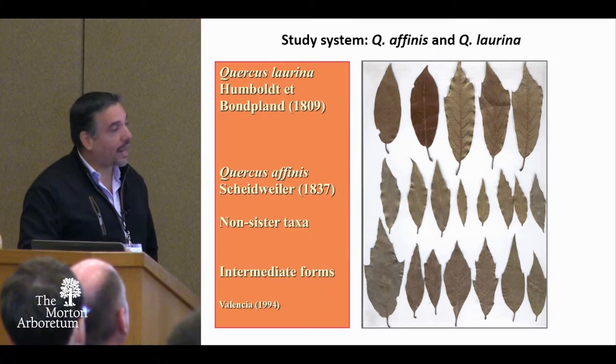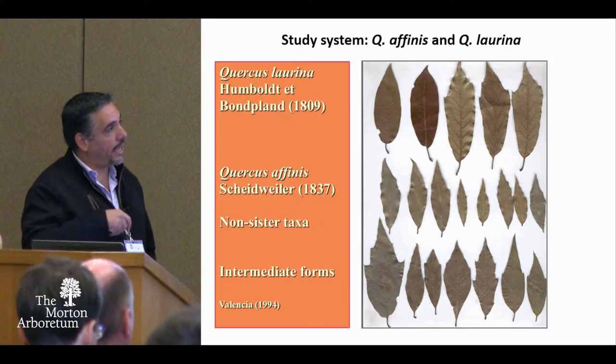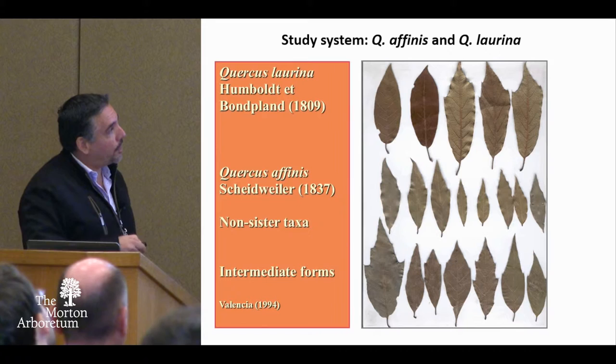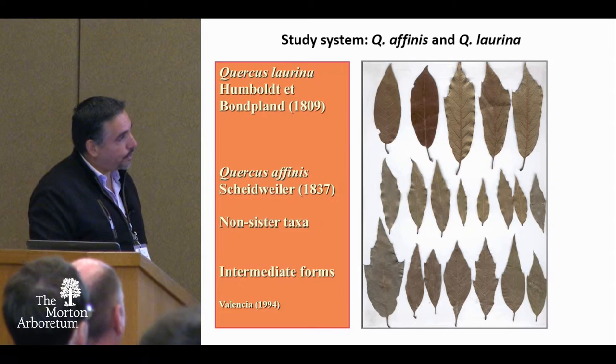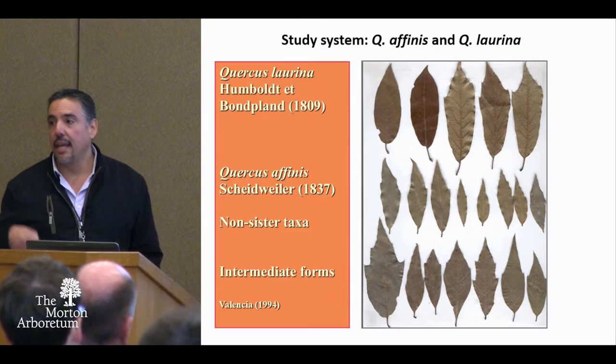We have applied this framework to the study of hybridization between two Mexican red oak species: Quercus laurina and Quercus affinis. They are quite different and can be easily separated when they live in allopatric conditions, when only one of the species occurs in a population. According to the new phylogeny, these are non-sister taxa — they are related, but not sister taxa. Nevertheless, they produce a wide range of intermediate forms when they occur in sympatric conditions. This was first described by the Mexican taxonomist Susana Valencia in 1994.